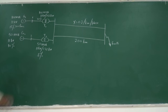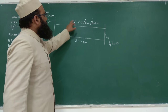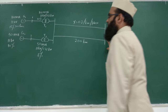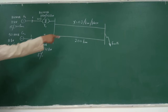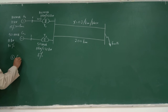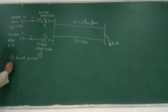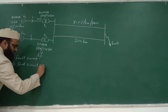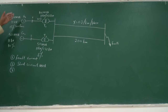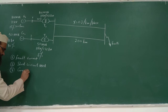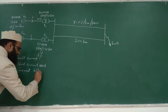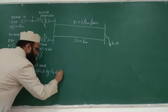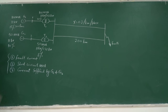The objectives are to calculate: first, the fault current; second, the short circuit MVA; and third, the current supplied by each of the two generators for this system whose single line diagram has been shown, with generators, transformers, and transmission lines as the three elements of the power system.